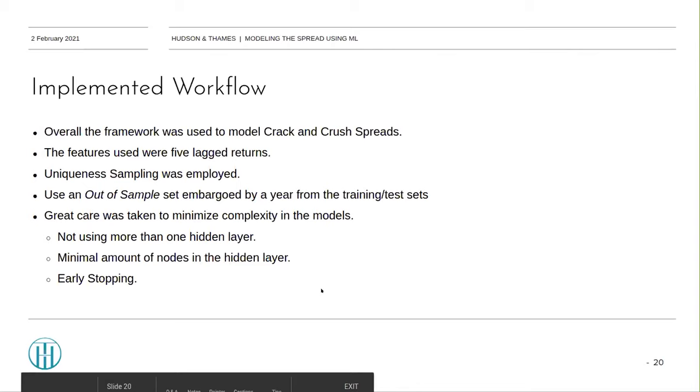Implemented workflow. Following Dunes' work, the spreads modeled were the classical crack and crush spreads. Feature-wise, only five lag returns were used. Uniqueness sampling was employed to remove overlapping features. Another overfitting mitigation was used, which consisted of setting a one-year embargo between the training validation set and the out-of-sample set. Also, modeling-wise, we tried to stay as conservative as possible using the minimum amount of layers and also using early stopping.